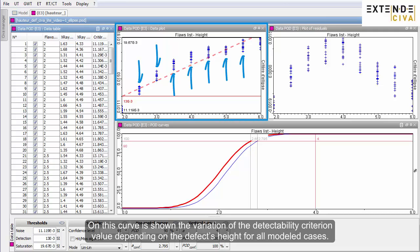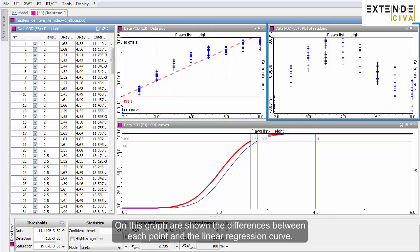On this curve is shown the variation of the detectability criterion value depending on the defect's height for all modeled cases. On this graph are shown the differences between each point and the linear regression curve.